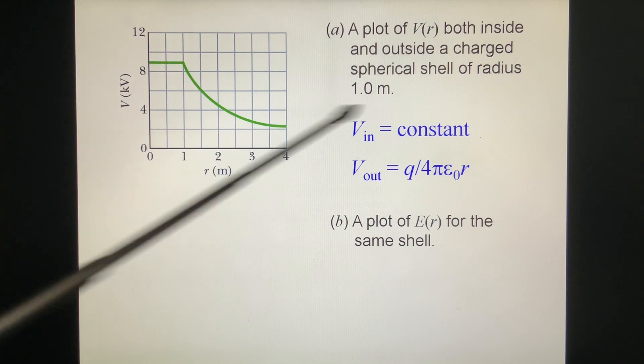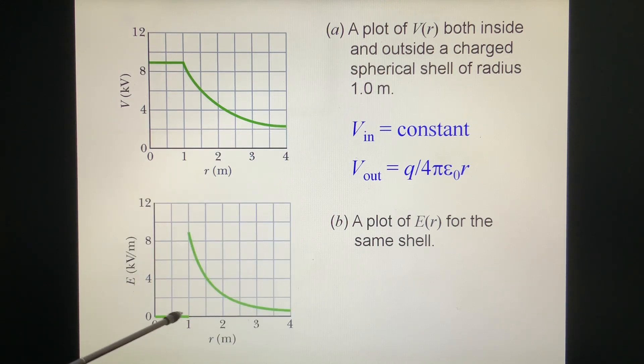So this is the same shell. Inside, E is zero. And outside, we treat it as a ball. So that E equals q over 4 pi epsilon zero r squared. This is the vector, this is the scalar.